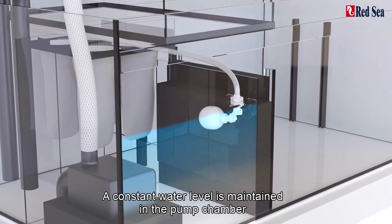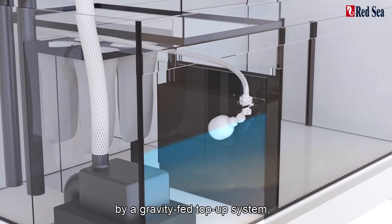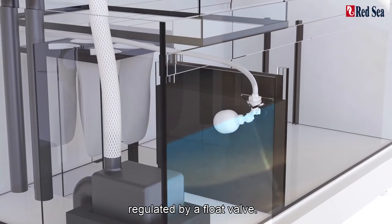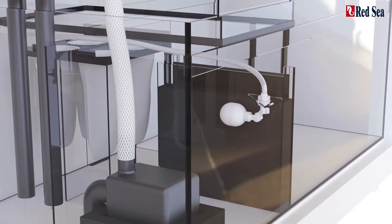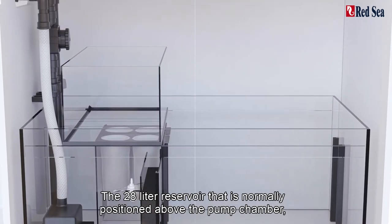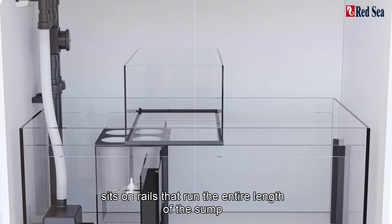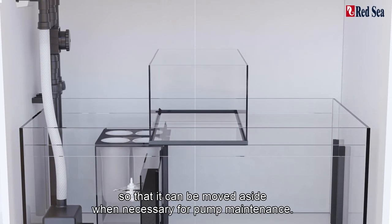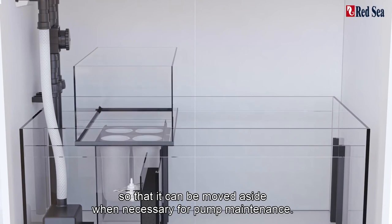A constant water level is maintained in the pump chamber by a gravity-fed top-up system regulated by a float valve. The 28-liter reservoir that is normally positioned above the pump chamber sits on rails that run the entire length of the sump so it can be moved aside when necessary for pump maintenance.